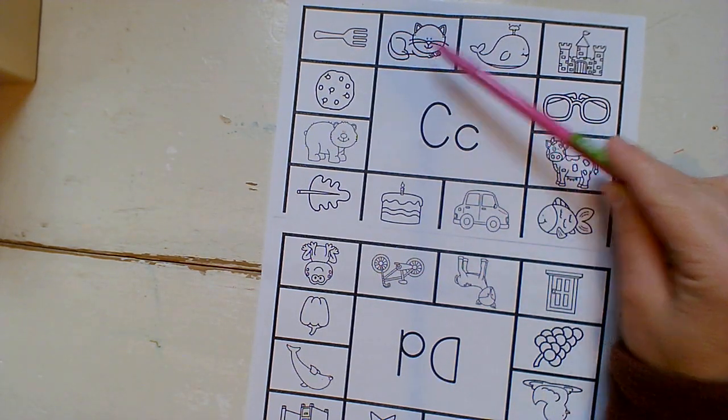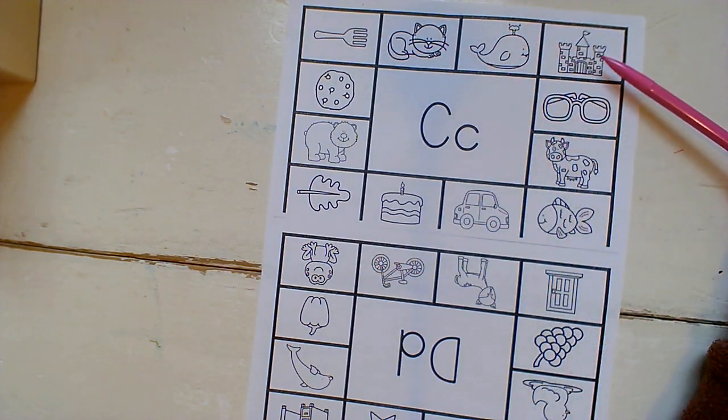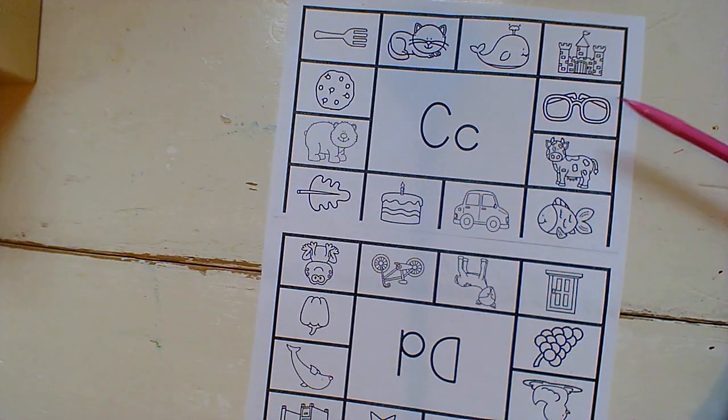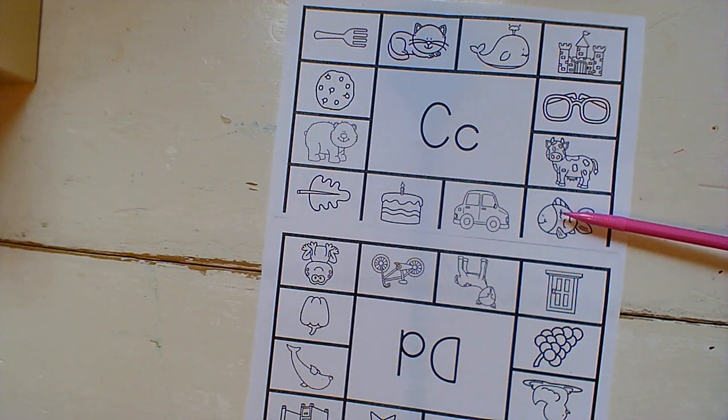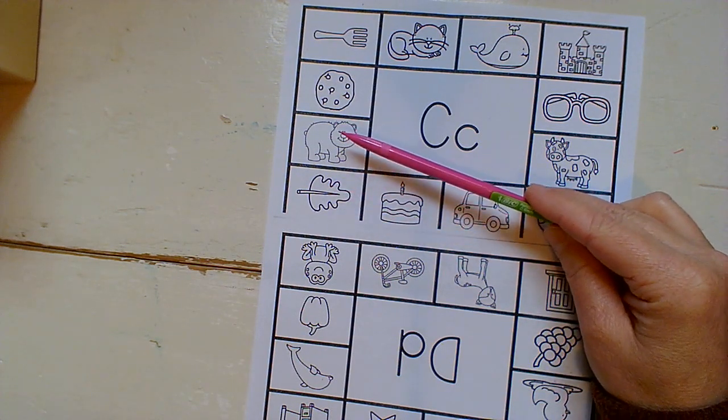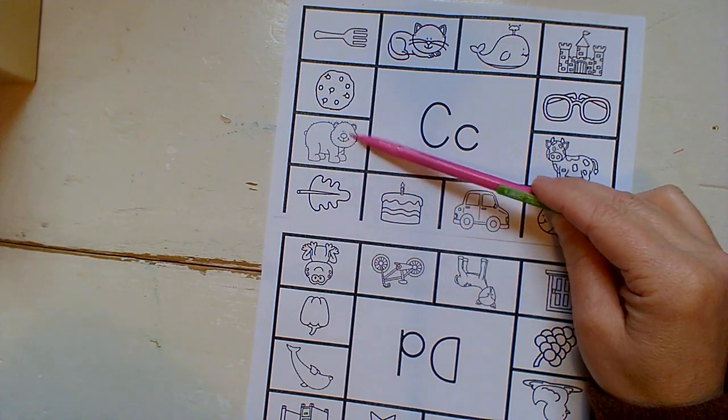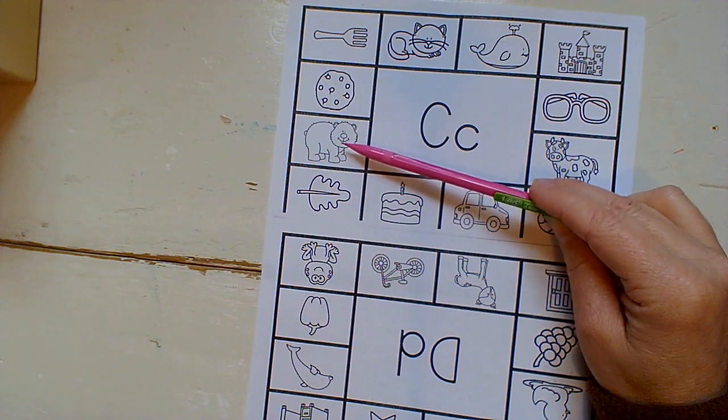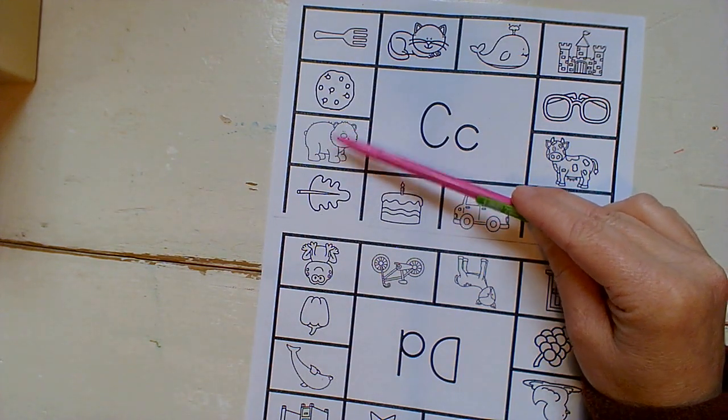We have fork, cat, whale, castle, glasses, cow, fish, car, cake, leaf, bear, I think. Maybe it could, you could call it a cub if you want to. It could either be a bear or a cub and cookie.